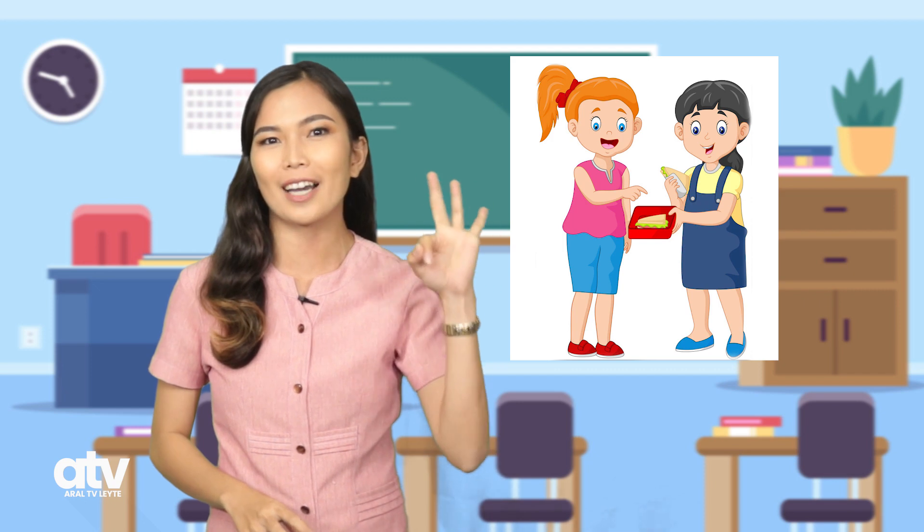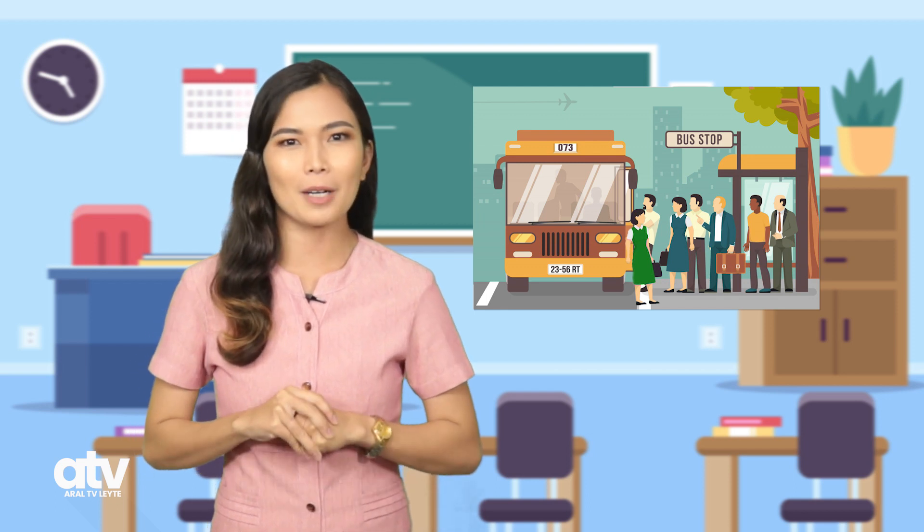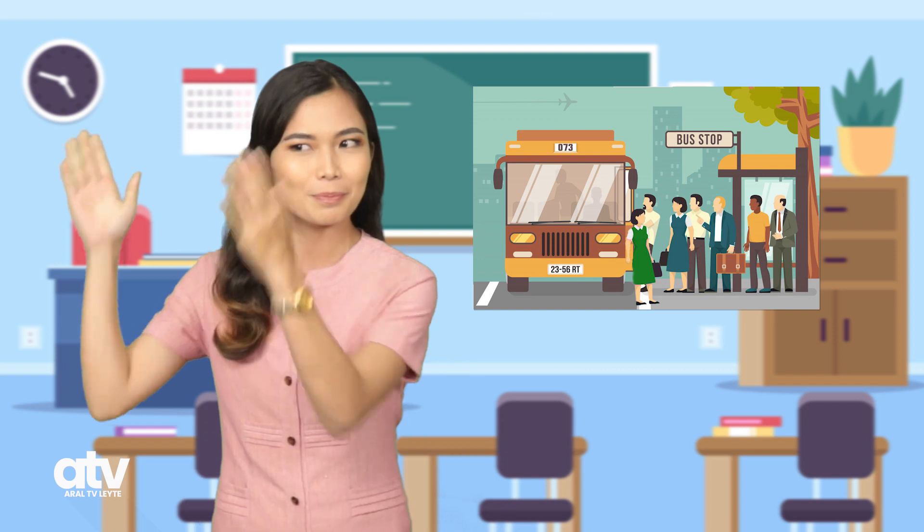Napakahusay! Ngayon, pumunta naman tayo sa ating susunod o pangatlong larawan. Ang pangatlong larawan naman ay nagpapakita ng isang ginang na sumisingit sa pila. Ito ba ay nagpapakita ng pagpapaubaya ng pansariling kapakanan para sa kabutihan ng kapwa? Hindi! Hindi tama ang sumingit sa pila sapagkat marami ang magagalit. Bigyan lamang natin ang ginang na ito ng isang palakpak. Isa.